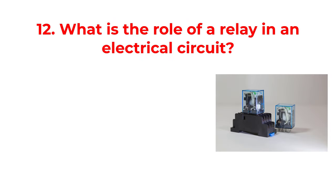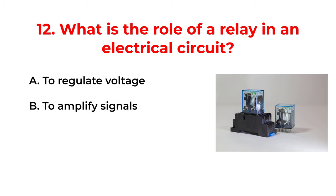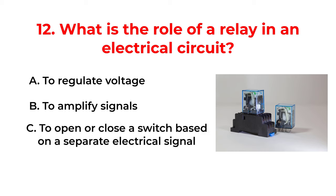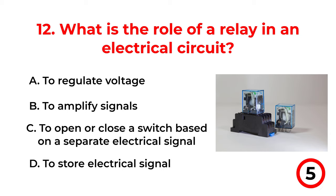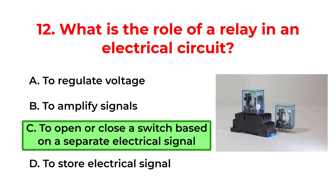What is the role of a relay in an electrical circuit? A. To regulate voltage. B. To amplify signals. C. To open or close a switch based on a separate electrical signal. D. To store electrical energy. The correct answer is option C: To open or close a switch based on a separate electrical signal.